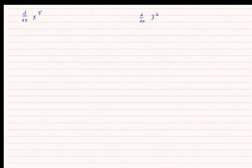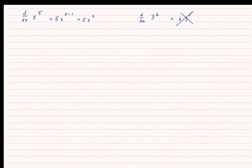By the power rule, the derivative with respect to x of x to the 5th is simply 5 times x to the 5 minus 1, or 5 times x to the 4th. For the second example, it would be tempting to say the derivative of 3 to the 6th is 6 times 3 to the 5th power — but that's not right, because 3 to the 6th is actually a constant. There's no x in there, so this is still equal to 0. Don't fall into that trap.